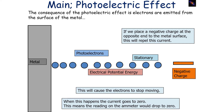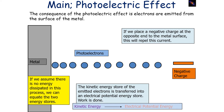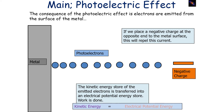When this happens, the current reading drops to zero, so any ammeter in the electrical circuit would read zero. We can suggest that the kinetic energy store of the emitted electrons is transferred into an electrical potential energy store. If we assume that there is no energy dissipated in this process, we can equate the two energy stores: the kinetic energy of the photoelectron is equal to the electrical potential energy of the photoelectron.